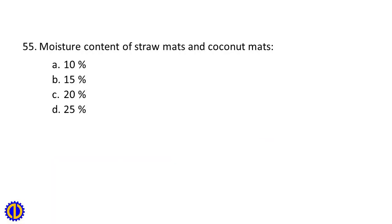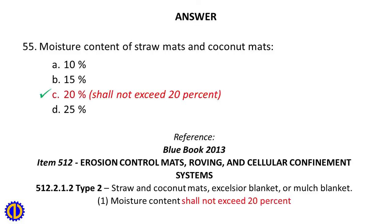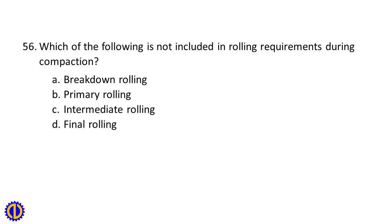Question 55: Moisture content of straw mats and coconut mats — A. 10%, B. 15%. Answer: A. 10%. Question 56: Which of the following is not included in rolling requirements during compaction? Answer: A. Breakdown rolling.